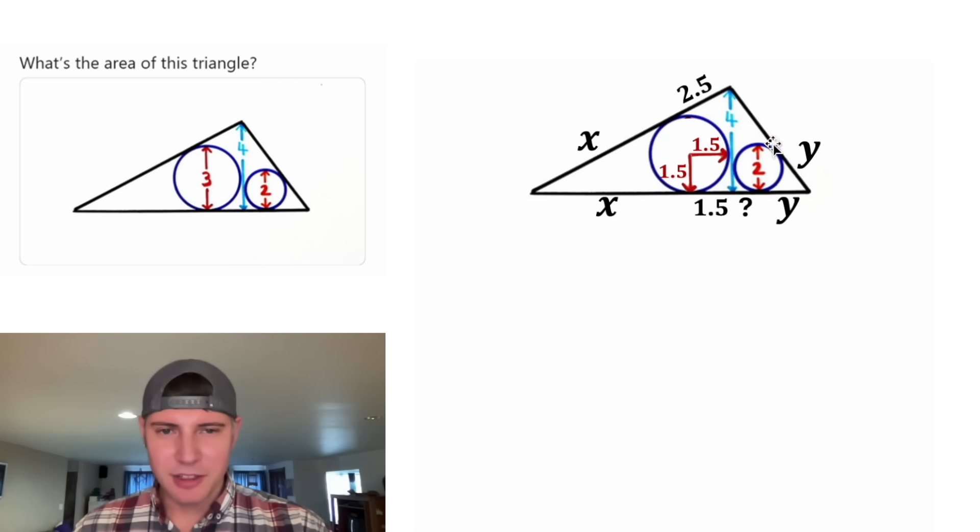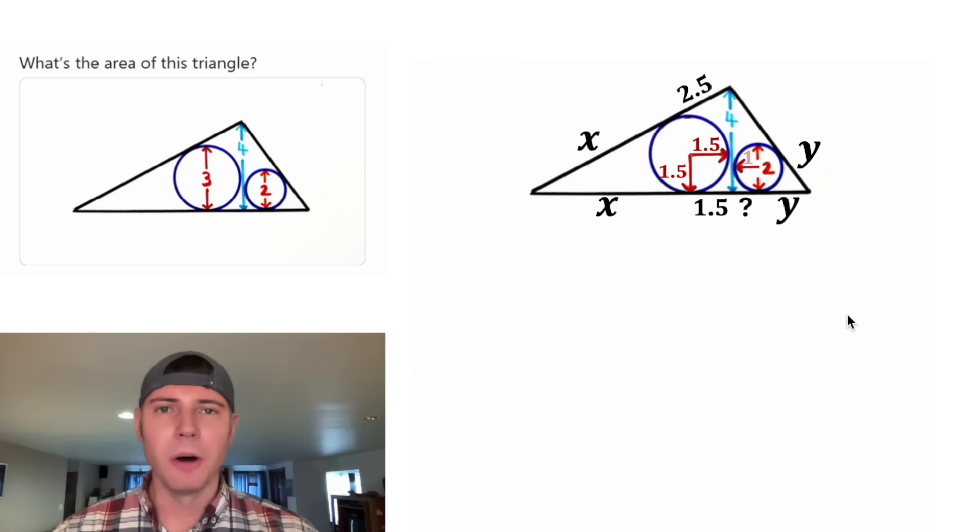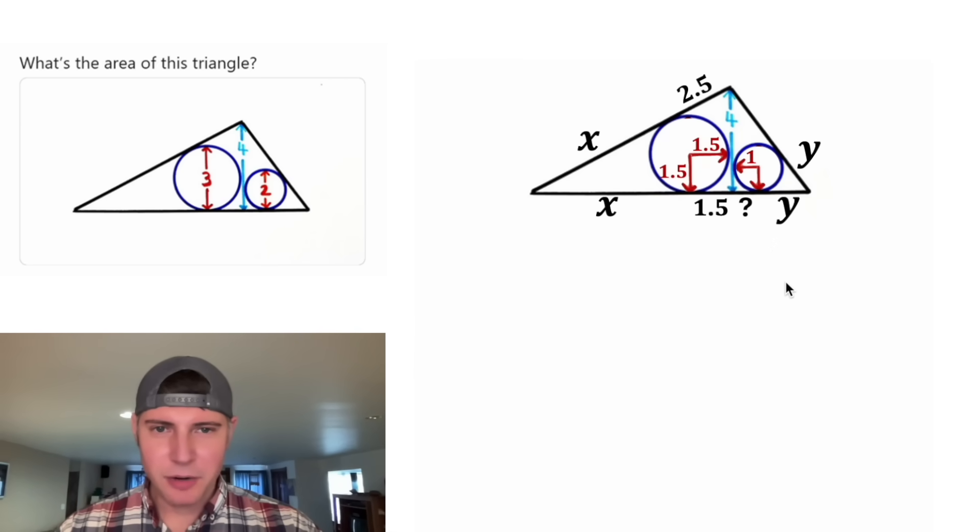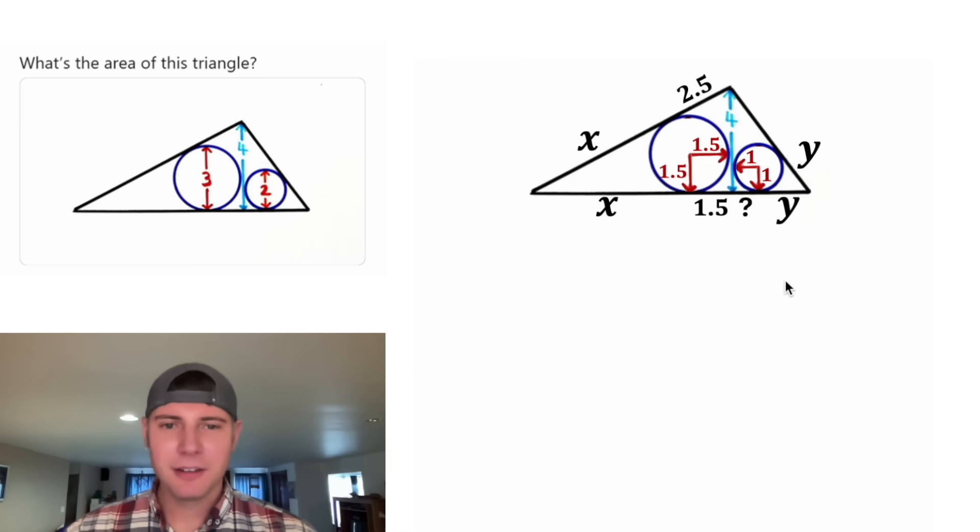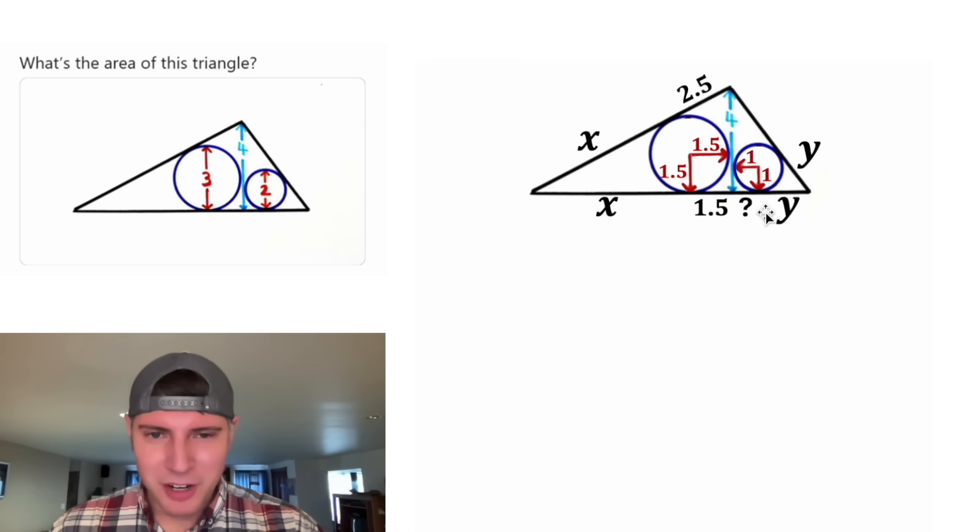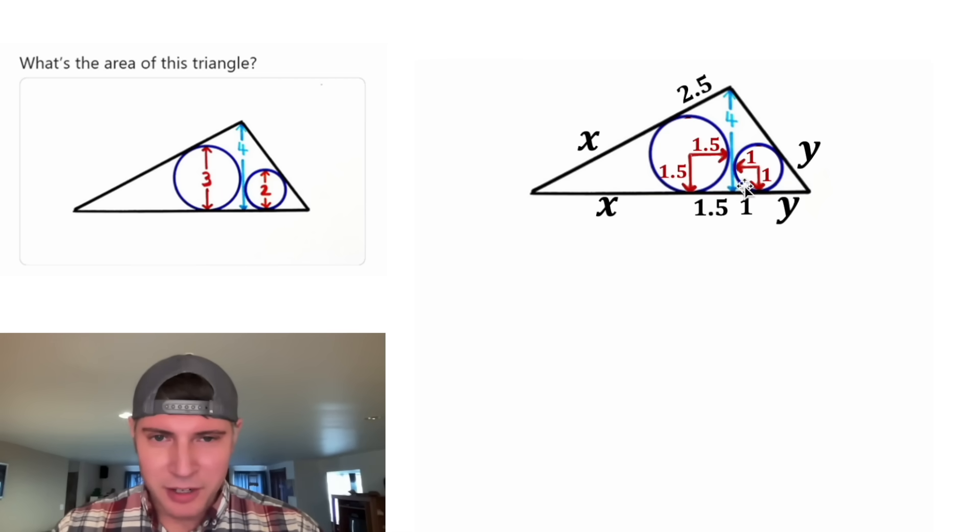And then let's look at this circle. The diameter is equal to two, which means the radius would be equal to one. And the same thing for this radius. It would also be equal to one. Since this horizontal radius is equal to one, the distance from this tangent point to here is equal to one. And then since the vertical radius is one, the distance from this tangent point to down here is equal to one.